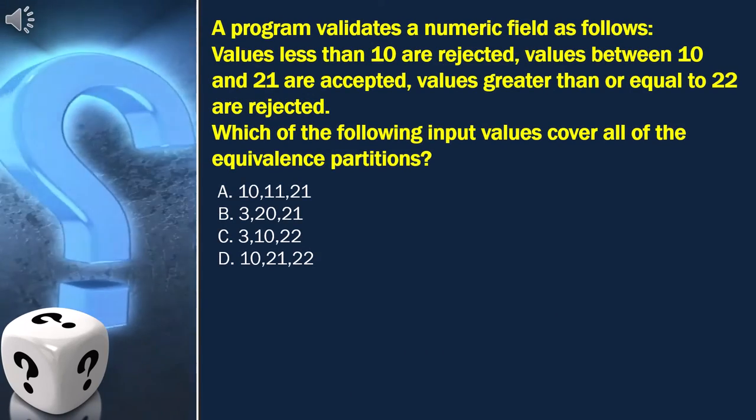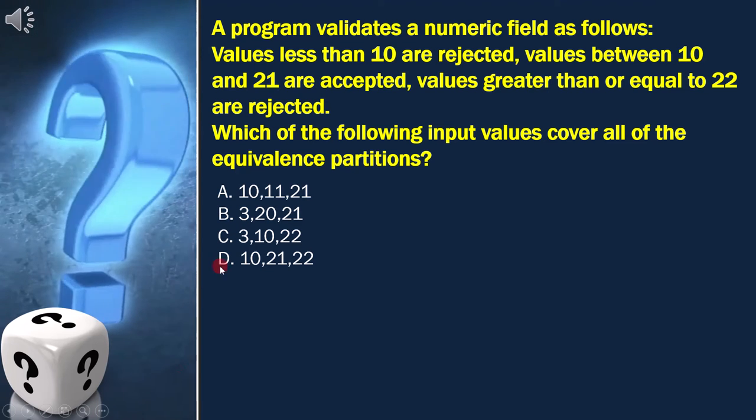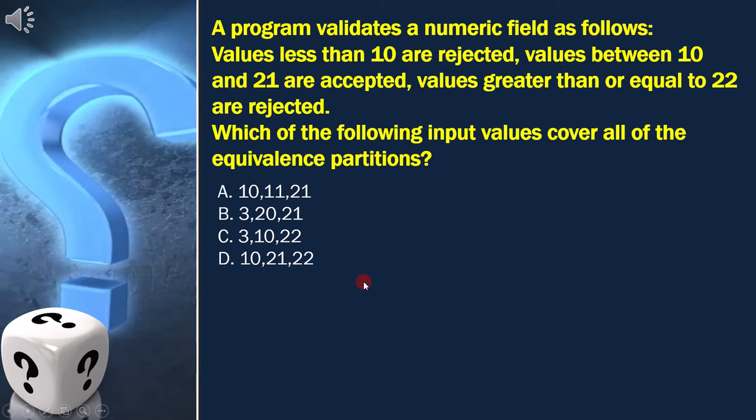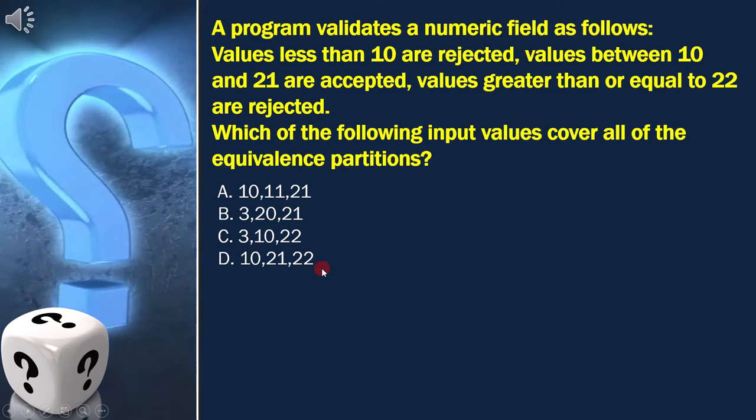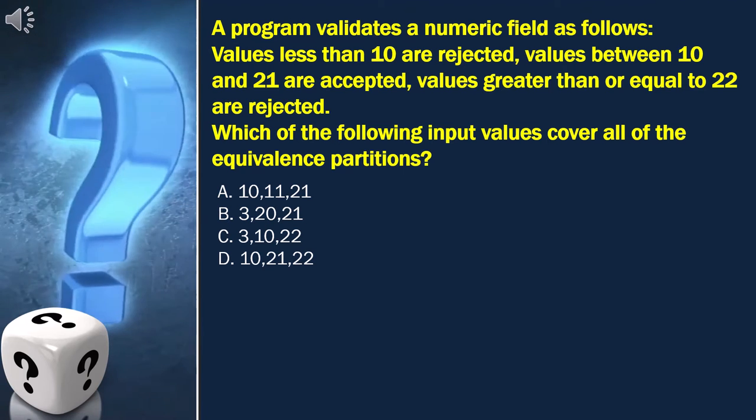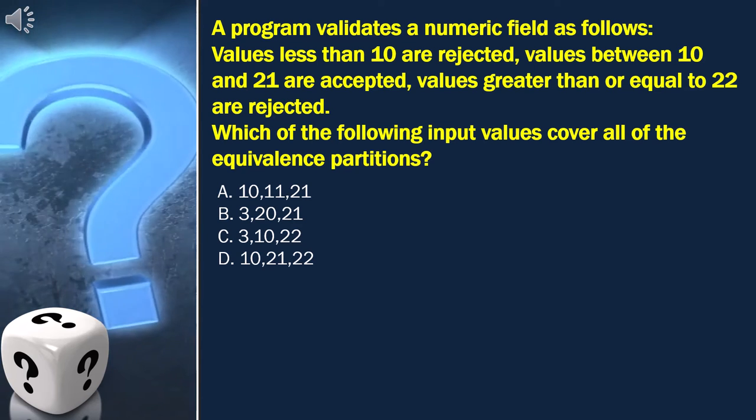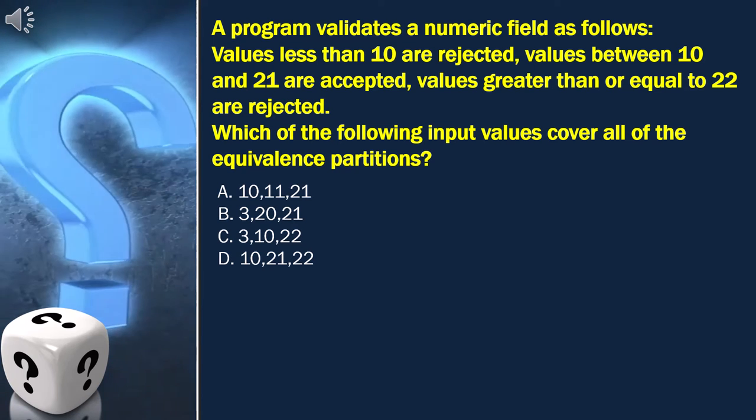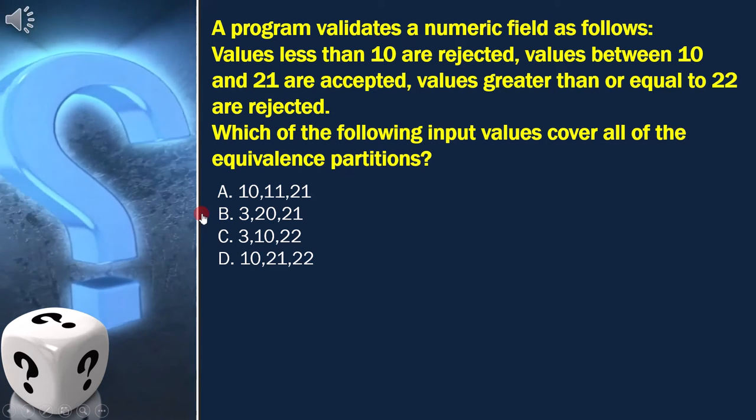Here, the question is: a program validates a numeric field as follows. Values less than 10 are rejected. Values between 10 and 21 are accepted. Values greater than or equal to 22 are rejected. Which of the following input values cover all of the equivalence partitions?